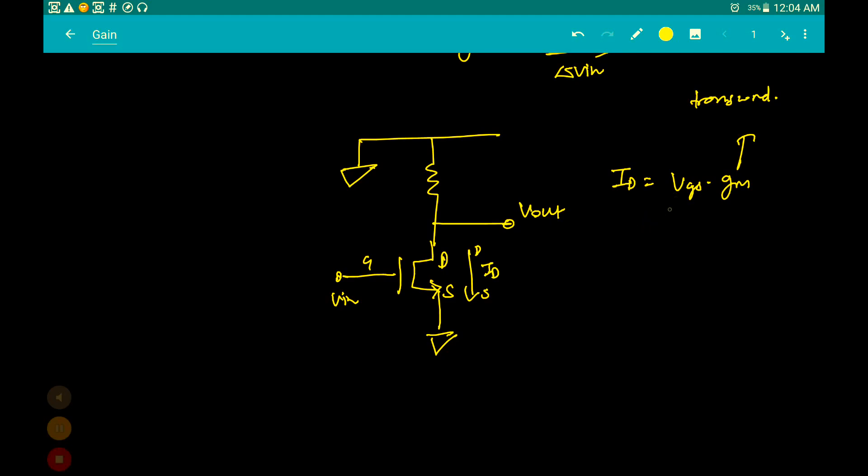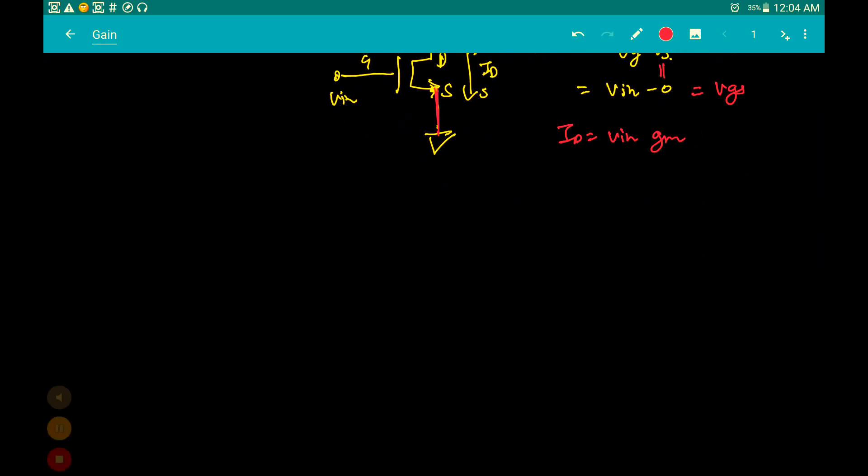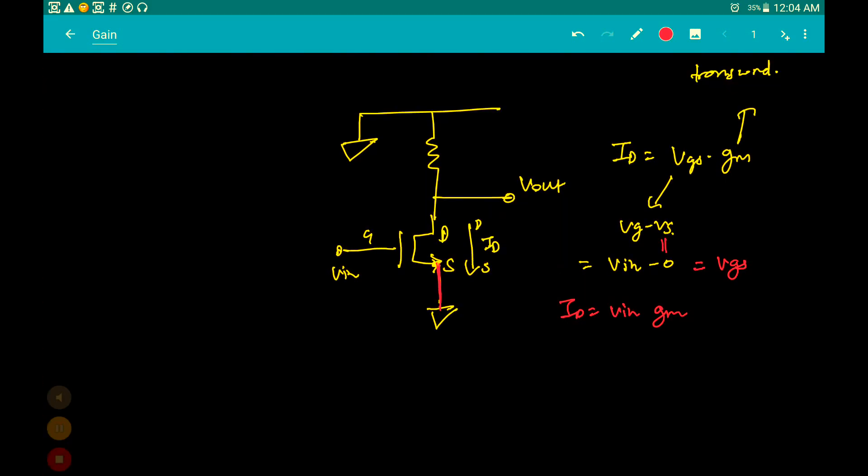What is VGS? VGS is equal to VG minus VS, which is equal to VIN minus 0. Why is VS equal to 0? Because if you see that S terminal, it has directly been connected to the ground. Therefore VS is equal to 0. VGS equals VIN, so ID becomes VIN into gm.